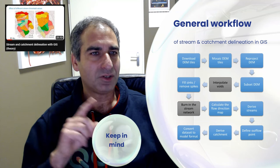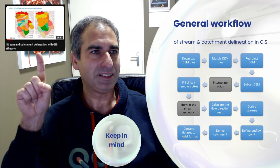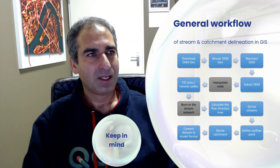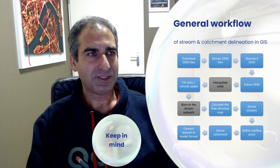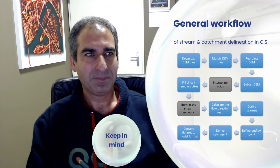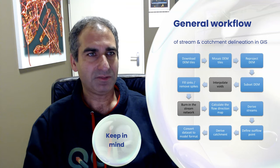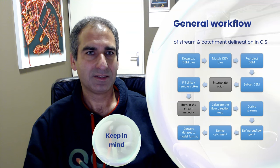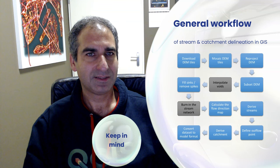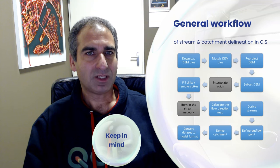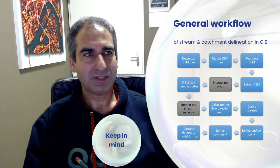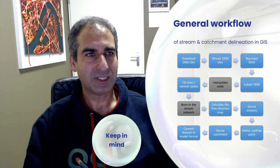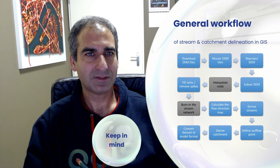If you need more information on the theory, have a look at this video. I'll now just quickly go through the theory. First, you need a DEM. If you download the digital elevation model, this is often provided in patches which you need to stitch together — this is what we call mosaicing. DEMs are also often provided in the geographic coordinate system and need to be projected to a Cartesian projection with X and Y coordinates in meters. Otherwise, this workflow doesn't work.